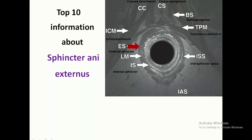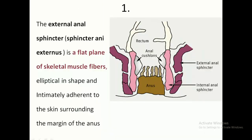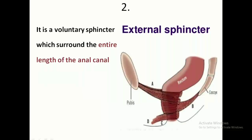This is the location of the external sphincter, and this is the location of the internal sphincter. The anal sphincter is a flattened plane of skeletal muscle, elliptical in shape, and adhered to the skin around the margin of the anus. This is a voluntary sphincter because it is made of skeletal muscle fibre, and it surrounds the entire length of the anal canal.